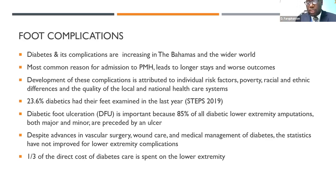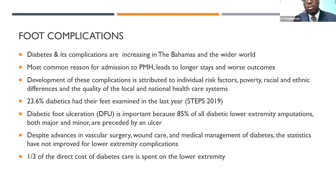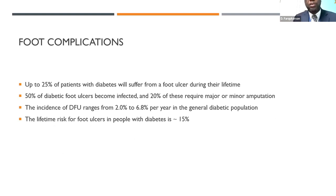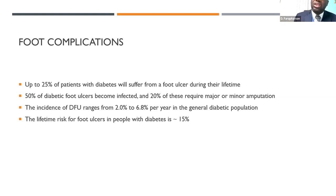One third of the direct cost of diabetes care is spent specifically on the lower extremity. Up to 25 percent of patients with diabetes will suffer from a foot ulcer sometime during their lifetime. About 50 percent of diabetic foot ulcers become infected, and about 20 percent of those infected require some major or minor amputation. A lot of this is preventable. The incidence of diabetic foot ulcers ranges between 2 and 6.8 percent per year, but the lifetime risk increases to about 15 percent.